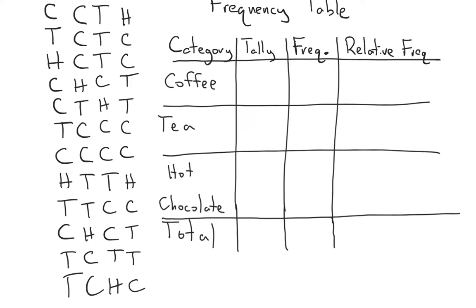Before we start talking about categorical data — and it's kind of the same thing with histograms as well — it's a good idea to talk about a frequency table. This is a good way of organizing your data so that you can plot it later in a nice chart. So imagine that I asked 48 people which of the following three drinks was their favorite: coffee, tea, and hot chocolate, and I kept note of what everybody said.